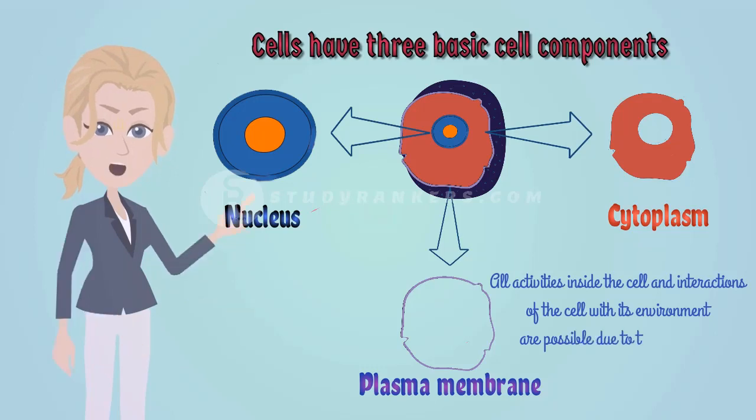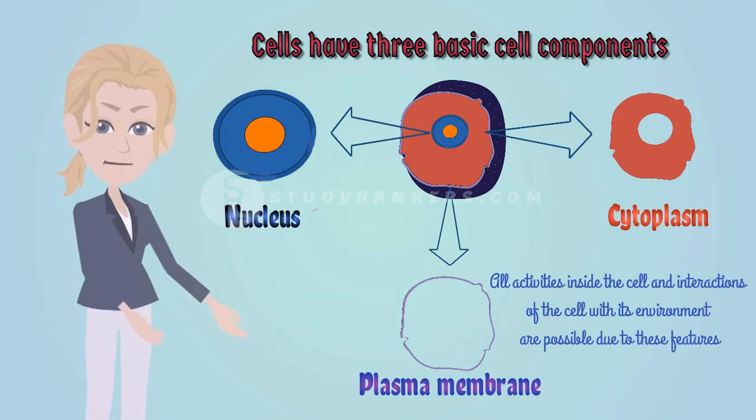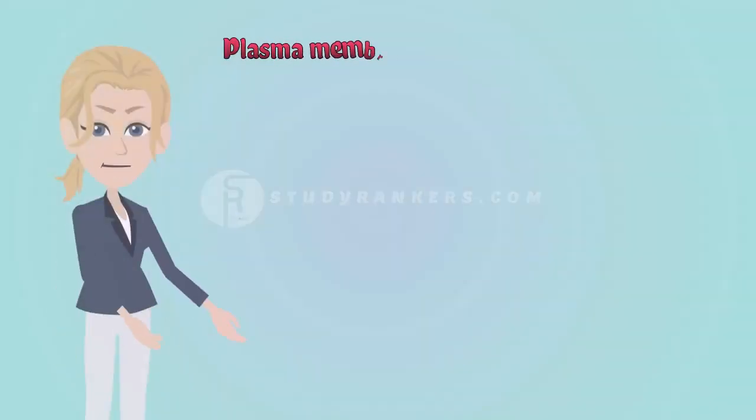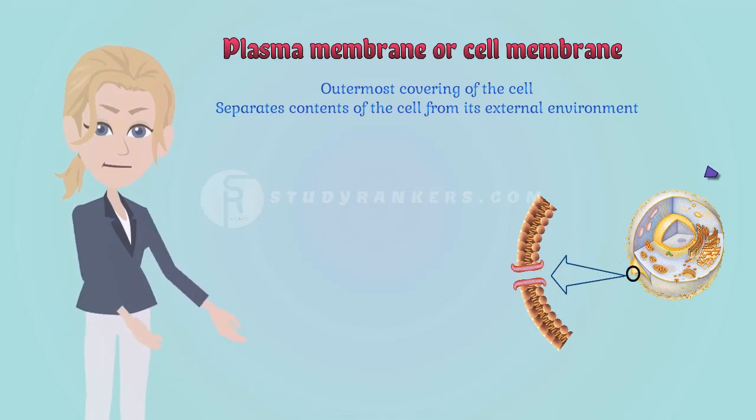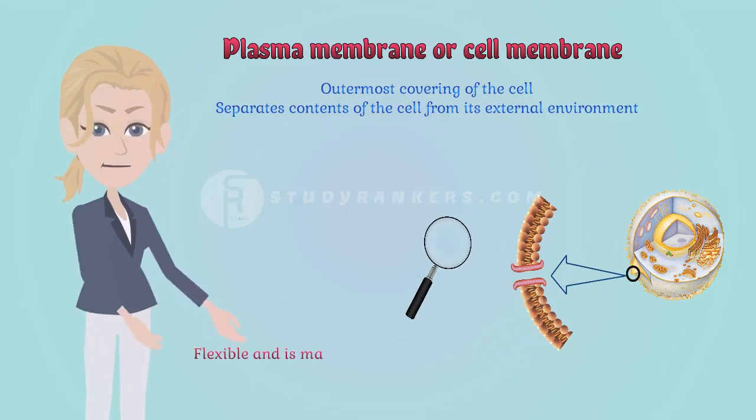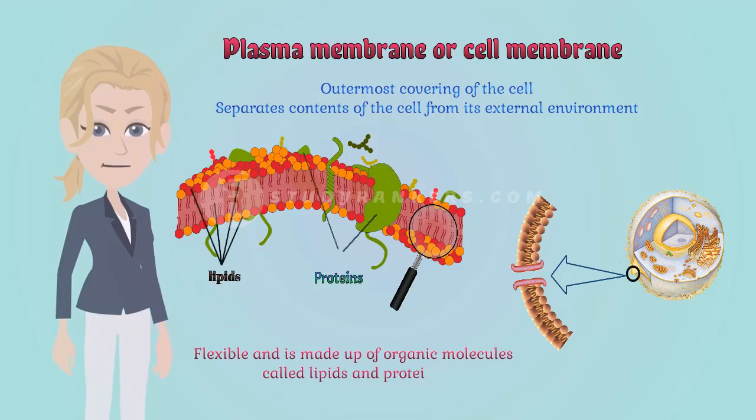Let us see how plasma membrane or cell membrane works. It is the outermost covering of the cell that separates the contents of the cell from its external environment. It is flexible and is made up of organic molecules called lipids and proteins.